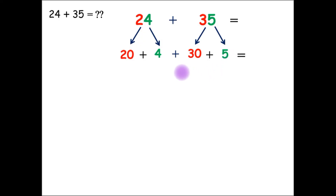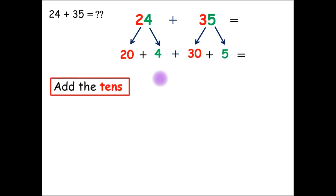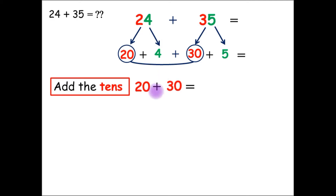First, we will add the tens. The tens are 20 and 30. So, 20 plus 30 equals 50.